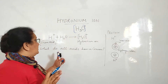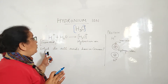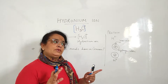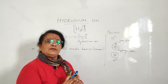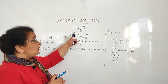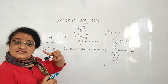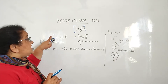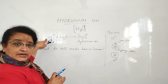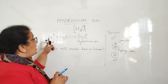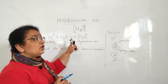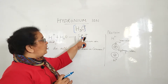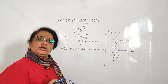There is a basic concept linked to this: what do all acids have in common? Hydronium ion is nothing but the H-ion — that is, from the acid — attached with a water molecule. That forms the hydronium ion.